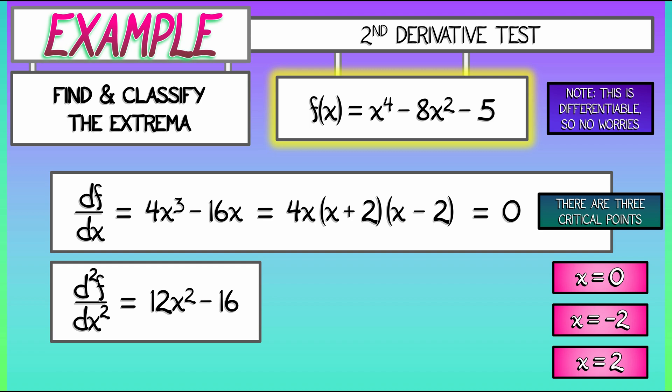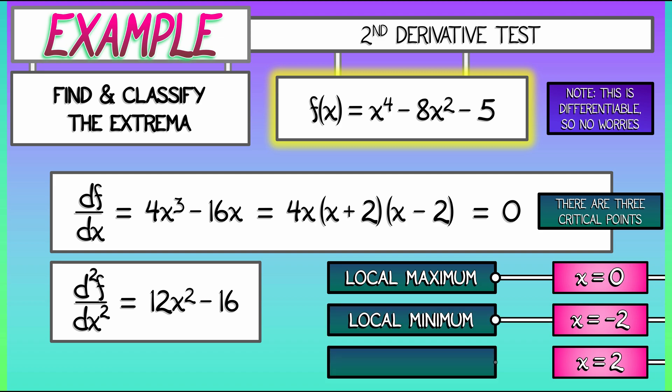So, if we evaluate the second derivative at x equals 0, we get a negative number. That means we have a local maximum. Evaluating at x equals negative 2 gives us a positive second derivative. That's a local minimum. The exact same computation holds for x equals positive 2.